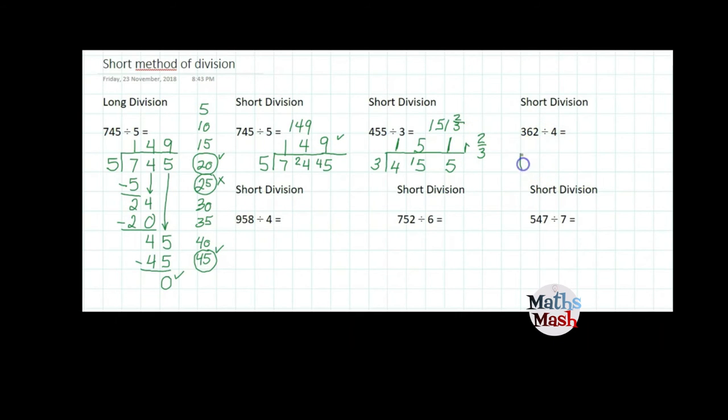And now I go to 362 divided by 4. Again I draw my house. Leave lots of room between the digits. My divisor is 4. How many sets of 4 in 3? None.